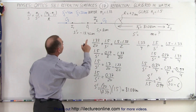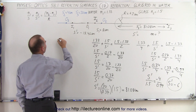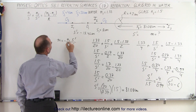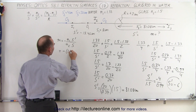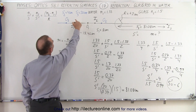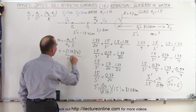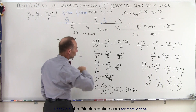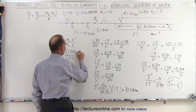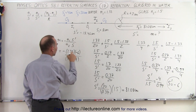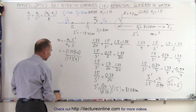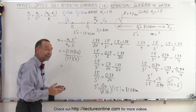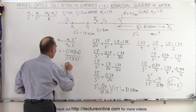Now what about the magnification? In the case of image 2, the magnification equals minus N1 times S prime divided by N2 times S. So that's minus 1.33 times S prime — which was minus 6 — divided by N2, which is 1.5, times S, which is positive 4. The two negatives cancel, giving 1.33 times 6 divided by 1.5 times 4. That works out to a positive 1.33 for the magnification of the second image relative to the second object.